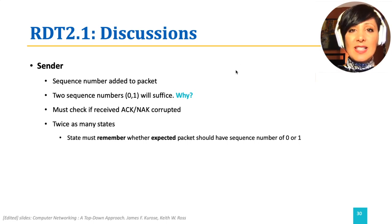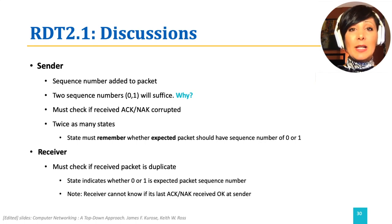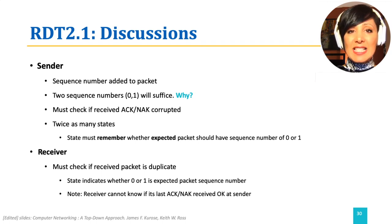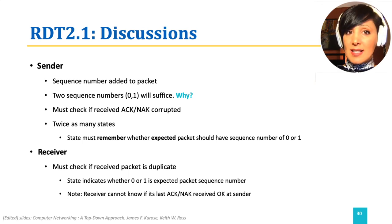On the receiver side, we checked for duplicate packets using the state waiting for the packet with the right sequence number. Note that during this procedure, the receiver does not know if its last ACK or NAC was received correctly at the sender. Please think about why this does not cause a problem.